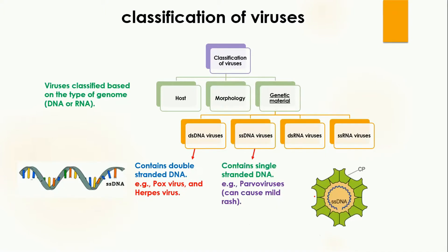Single-stranded DNA viruses contain only one strand of DNA. 'SS' means single-stranded while 'DS' means double-stranded. In single-stranded viruses, only one strand of DNA is present while the other is absent. Their example is parvo virus. Here you can see that the parvo virus contains only a single strand of DNA. These parvo viruses cause mild rash in organisms.